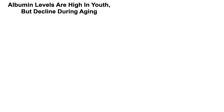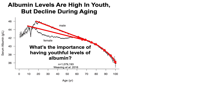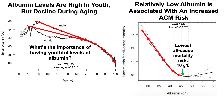Albumin levels are high in youth but decline during aging. Looking at serum levels of albumin on the y-axis plotted against age all the way up to 100 years: albumin levels peak in youth at about 46 g/L in men and 45 g/L in women, then decline to about 36 g/L in 100-year-olds. Looking at all-cause mortality risk plotted against albumin concentration: the lowest all-cause mortality risk is associated with an albumin level found in youth, 46 g/L. As albumin concentration declines as found in aging, we see significantly increased all-cause mortality risk.